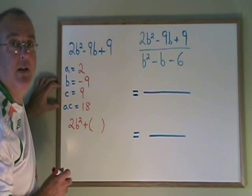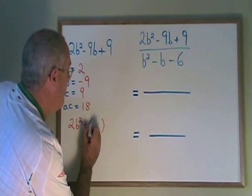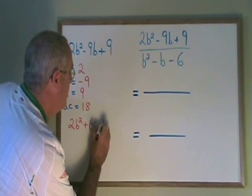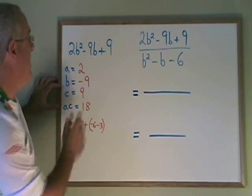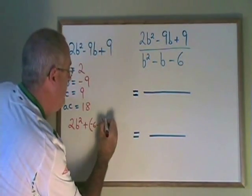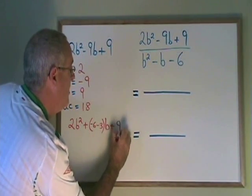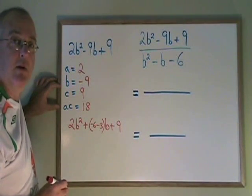Those two numbers are negative 6 and negative 3. So in my bracket, I write minus 6 minus 3. Then I write my b plus 9 to finish writing the original trinomial.